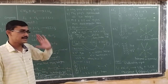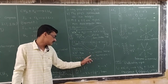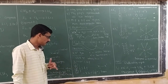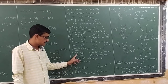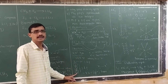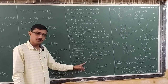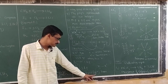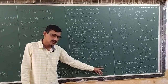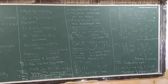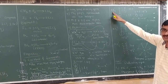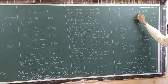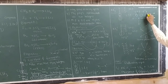Now for structures. For XX' type: the central atom X is in group 7A, so it has 7 valence electrons. One is bonded with X', leaving 3 lone pairs. Total 4 electron pairs → sp3 hybridization → 3 lone pairs → linear shape. For XX'3 type: 7 valence electrons, 3 bond pairs with 3 halogens plus 2 lone pairs → 5 electron pairs → sp3d hybridization → T-shaped structure.